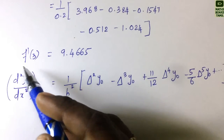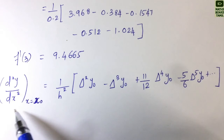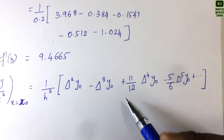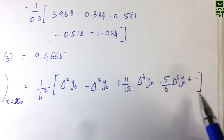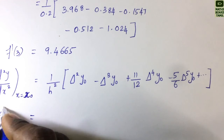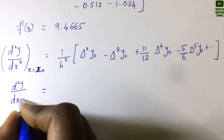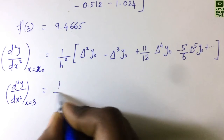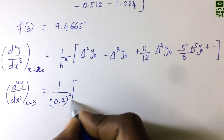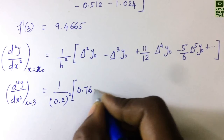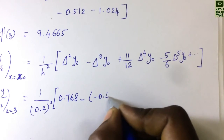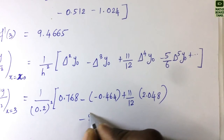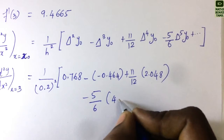Next, we find the second derivative f''(3). The formula is: d²y/dx² at x = x₀ = (1/h²)[Δ²y₀ − Δ³y₀ + (11/12)Δ⁴y₀ − (5/6)Δ⁵y₀ + ...]. So d²y/dx² at x = 3 equals (1/0.2²)[0.768 − (−0.464) + (11/12)(2.048) − (5/6)(−5.12)].